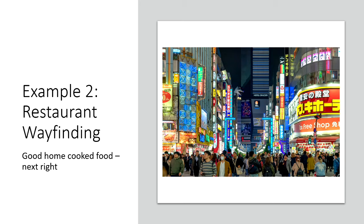Second example is restaurant wayfinding. Tell people there's good home-cooked food on the next right, or the best ribs in town coming up on the left. You want to send people who are already in the area to that particular destination — wayfinding for your restaurant, wayfinding for your store.